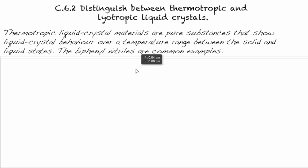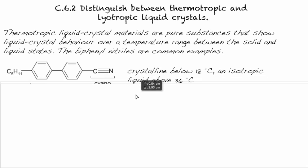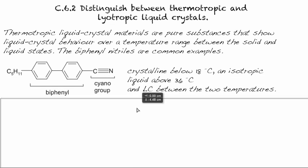The biphenyl nitriles are common examples, which we'll examine in more detail in HL. What you see here is a carbon chain, a biphenyl group (meaning two benzene rings), and then a cyano or nitrile group.